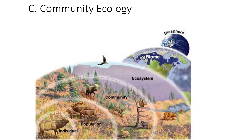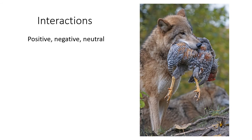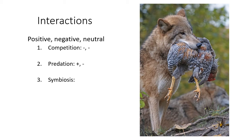Moving on to community ecology. The community is smaller than the ecosystem but is a group of populations, often of different species, living in the same area, along with their interactions. Interactions can be positive, negative, or neutral. For example, the interaction between a wolf and a chicken was positive for the canid and negative for the chicken. Competition is a negative interaction between two species, while predation is positive for one and negative for the other.